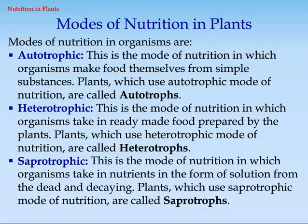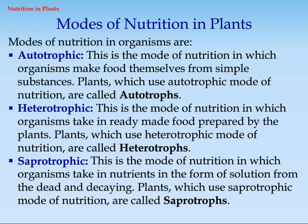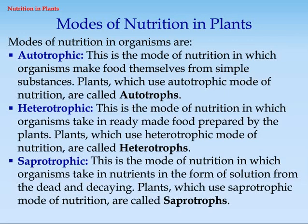Heterotrophic — this is the mode of nutrition in which organisms take in ready-made food prepared by the plants. Plants which use heterotrophic mode of nutrition are called heterotrophs. Saprotrophic — this is the mode of nutrition in which organisms take in nutrients in the form of solution from dead and decaying matter. Plants which use saprotrophic mode of nutrition are called saprotrophs.